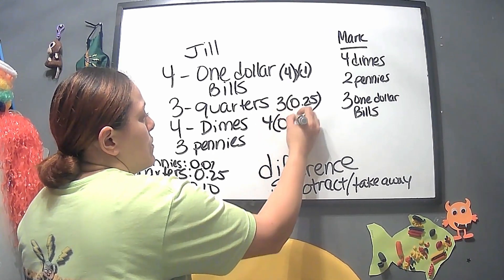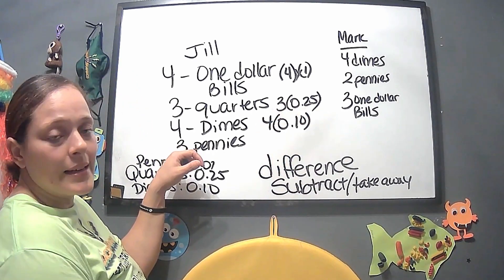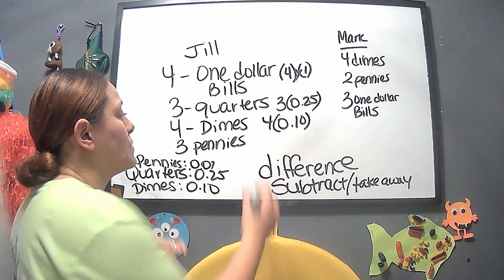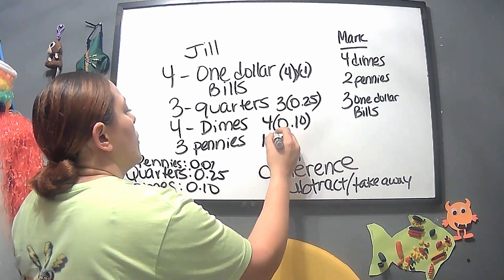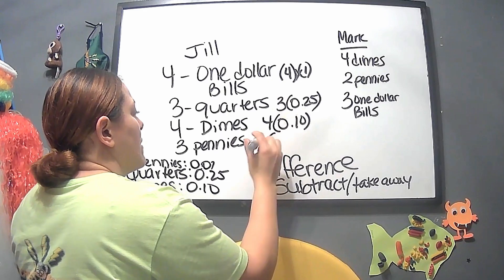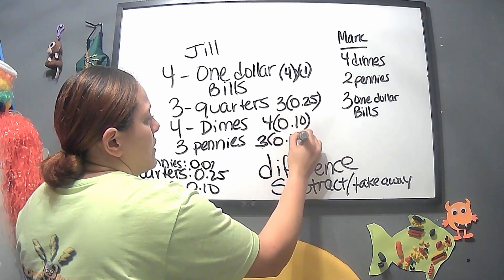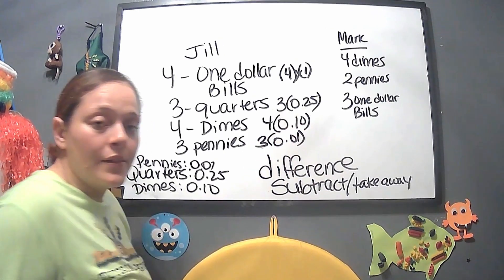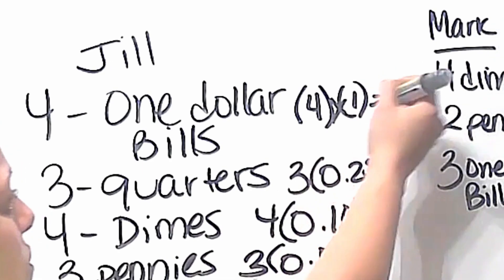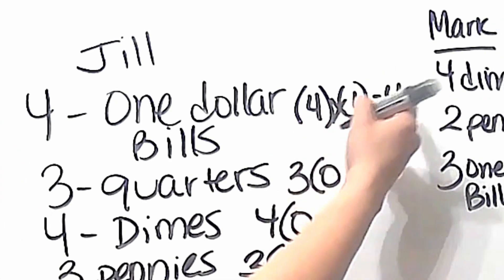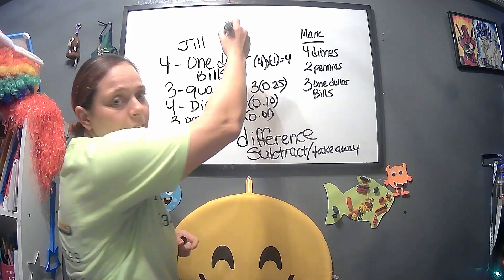And pennies, which are 0.01 for one cent — we have three of them. So three times 0.01. Now let's solve: four times one is four. For quarters, 0.25 times three: five times three is 15, three times two is six plus one is seven, and three times zero is zero — so we have 0.75.